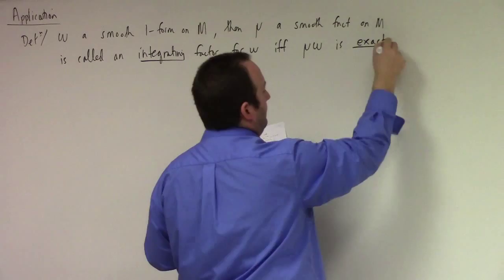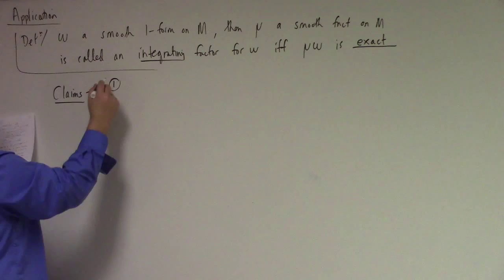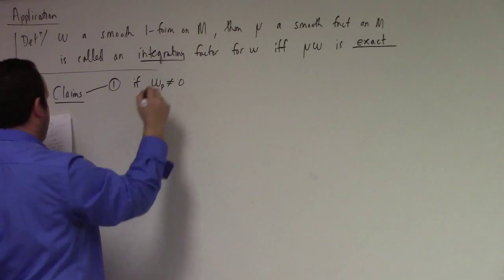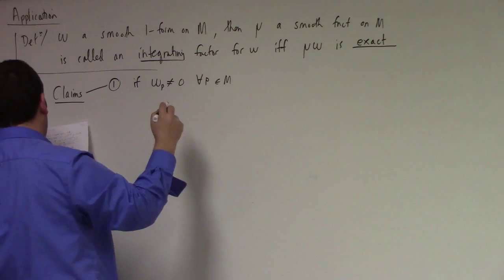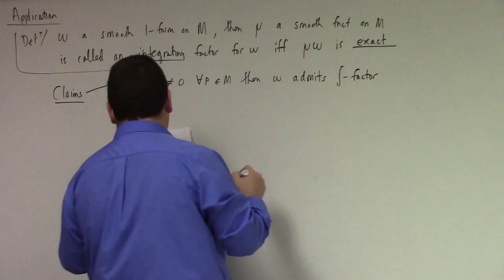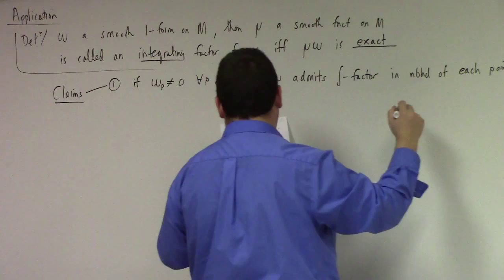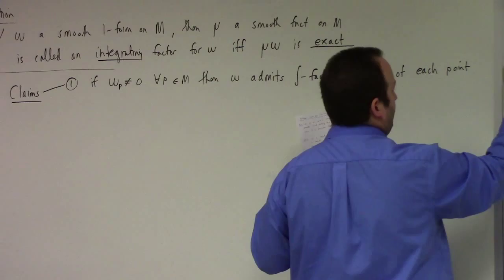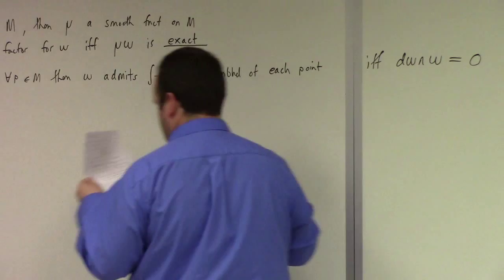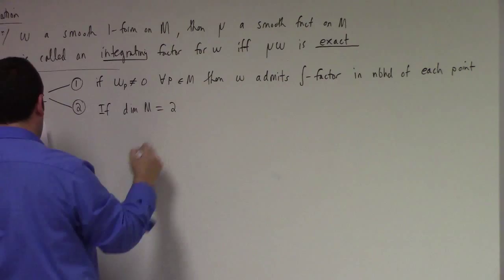So a couple of claims which we'll prove. One: if ω is non-zero at P for all P, then ω admits an integrating factor in a neighborhood of each point if and only if dω ∧ ω equals zero. Second claim: if the dimension of M is two, then every non-vanishing one-form admits an integrating factor in a neighborhood of each point.